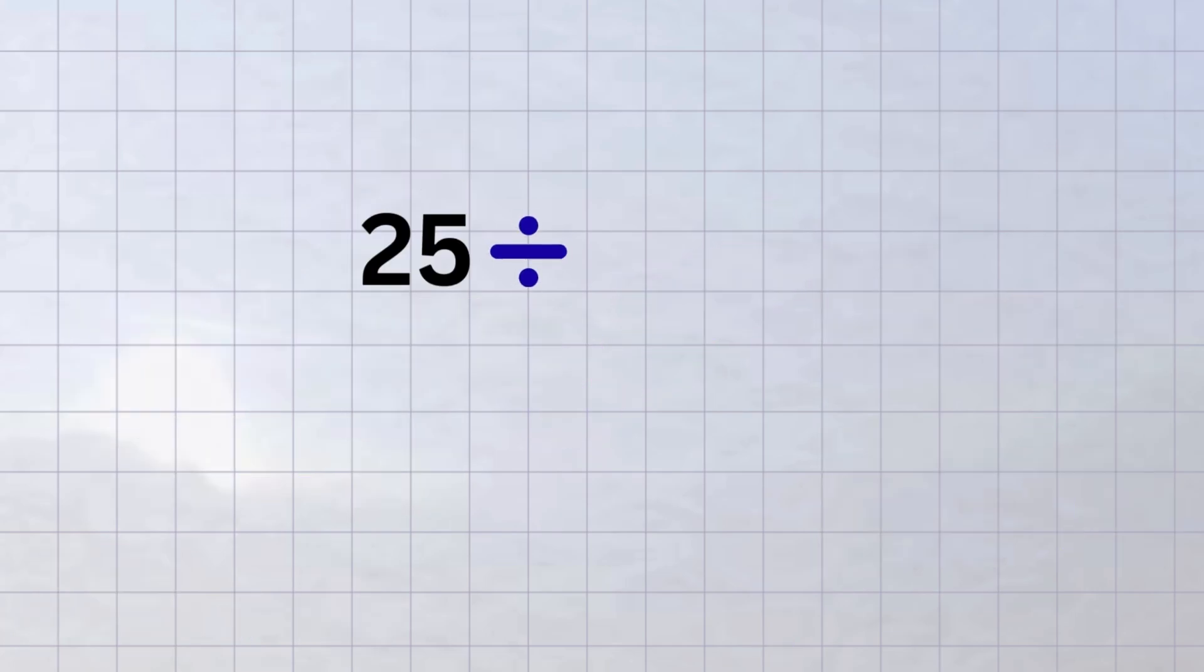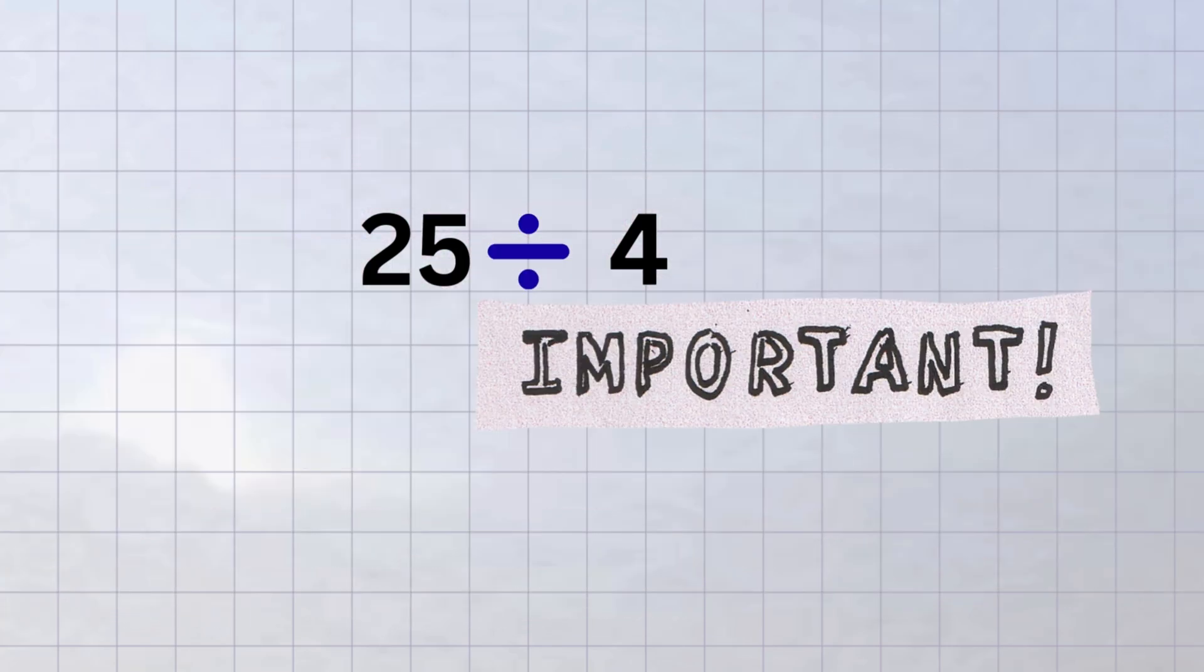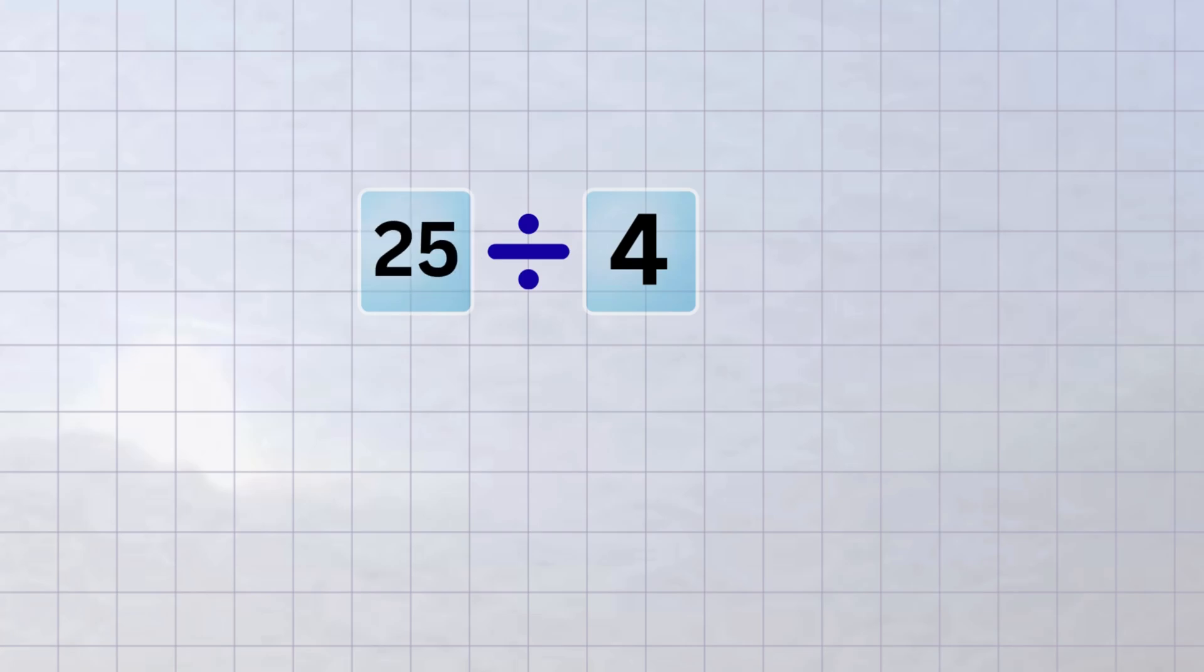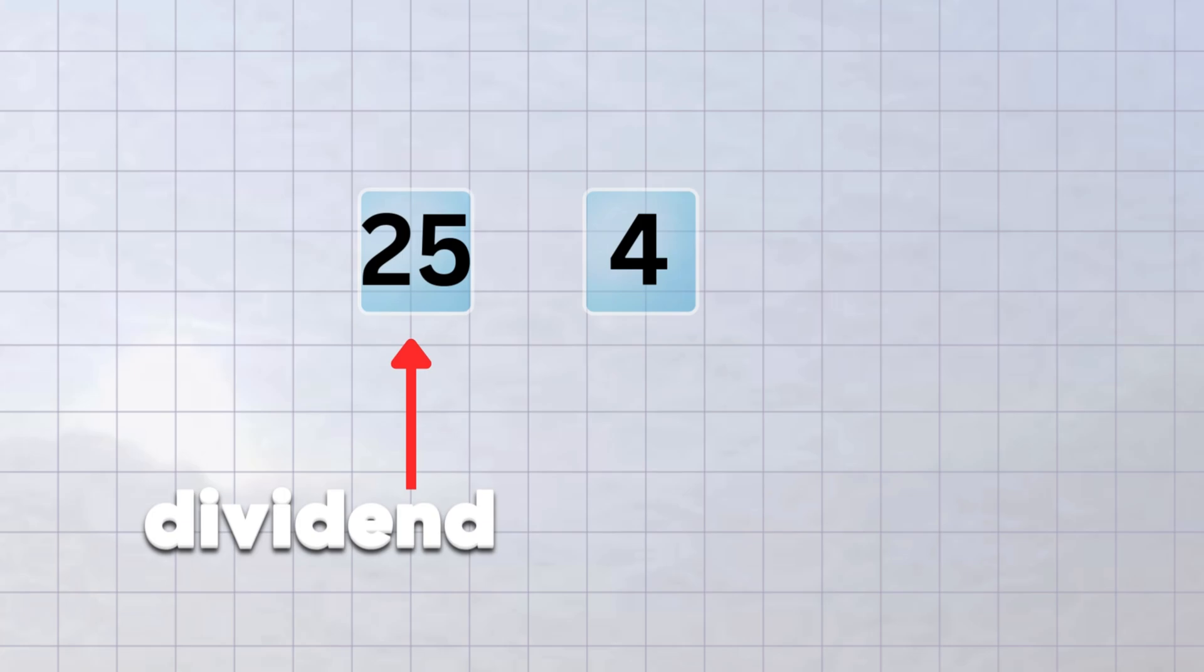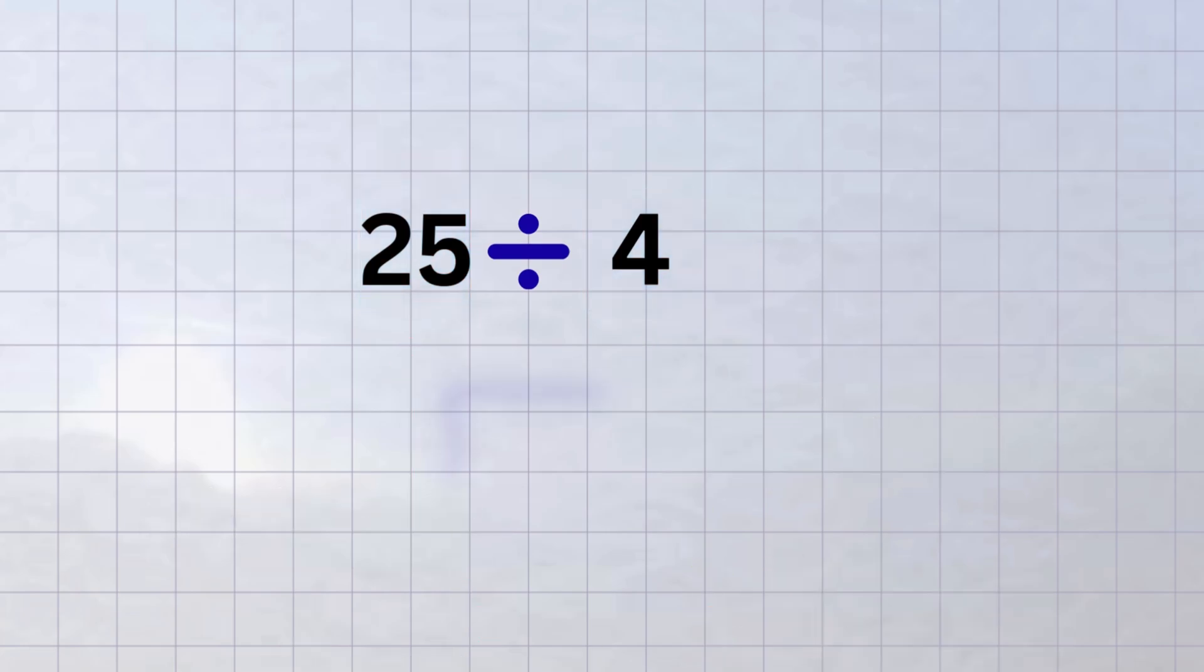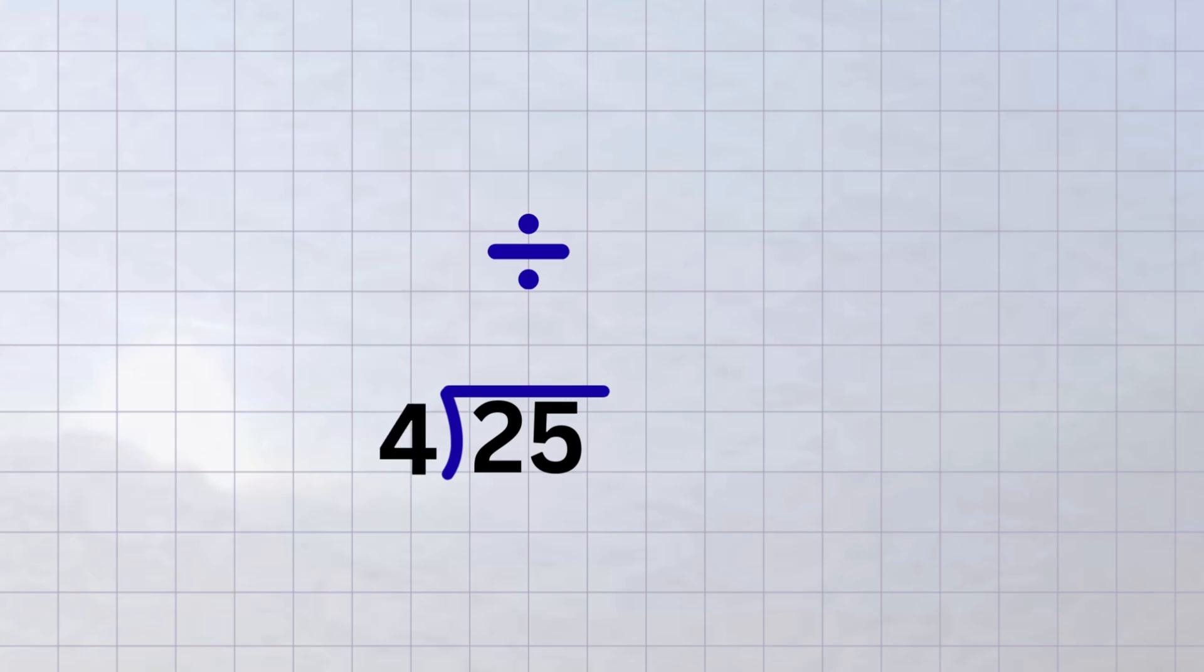Let's try a problem. Twenty-five divided by four. The most important thing we need to know is what's happening with these numbers. Well, twenty-five is the dividend, that's the number that comes before the division sign. And four is the divisor, it always comes after the division sign. So which number goes inside and which one goes outside? It's the dividend that goes inside, because it's the number we want to divide, and the divisor goes outside, because it's the number we're dividing by.